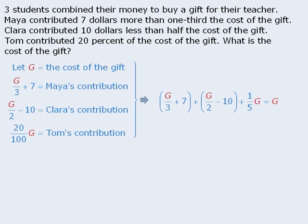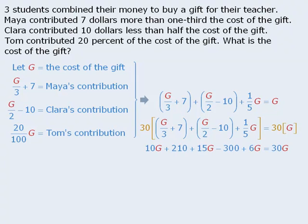First, to eliminate the denominators, we can multiply both sides by 30 to get the following. Then we simplify the left-hand side, then subtract 31g from both sides, and then divide both sides by negative 1 to get g equals 90. The question asks us to find the cost of the gift, so since g equals the cost of the gift, the gift must cost $90.